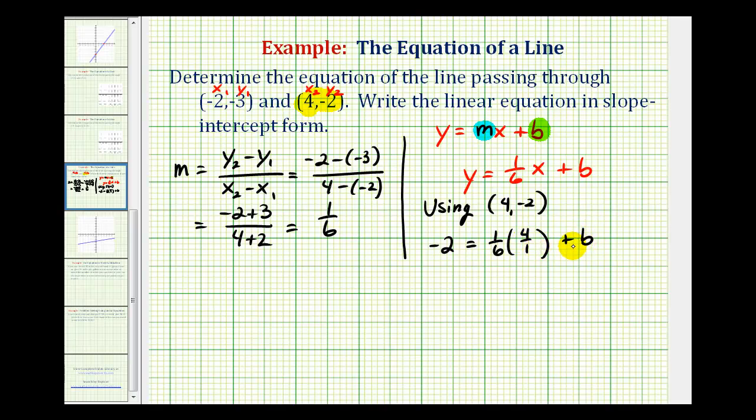Now we can solve this equation for b. We'll first determine this product here. Notice there's a common factor of two. There's two twos in four and three twos in six. So we have negative two equals, this would be two-thirds, plus b. So now we'll subtract two-thirds on both sides. So we'd have b equals, this would be negative two and two-thirds.